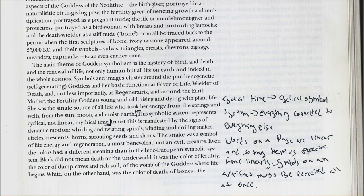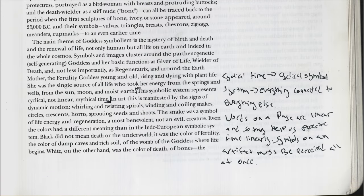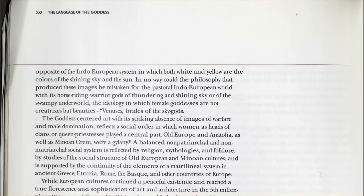This symbolic system represents cyclical, not linear, mythical time. In art, this is manifested by signs of dynamic motion — whirling and twisting spirals, winding and coiling snakes, circles, crescents, horns, sprouting seeds and shoots. The snake was a symbol of life energy and regeneration, a most benevolent, not evil creature. Even the colors had different meanings than in the Indo-European symbolic system. Black did not mean death or the underworld — it was the color of fertility, of damp caves and rich soil, of the womb of the goddess where life begins. White, on the other hand, was the color of death, of bones.